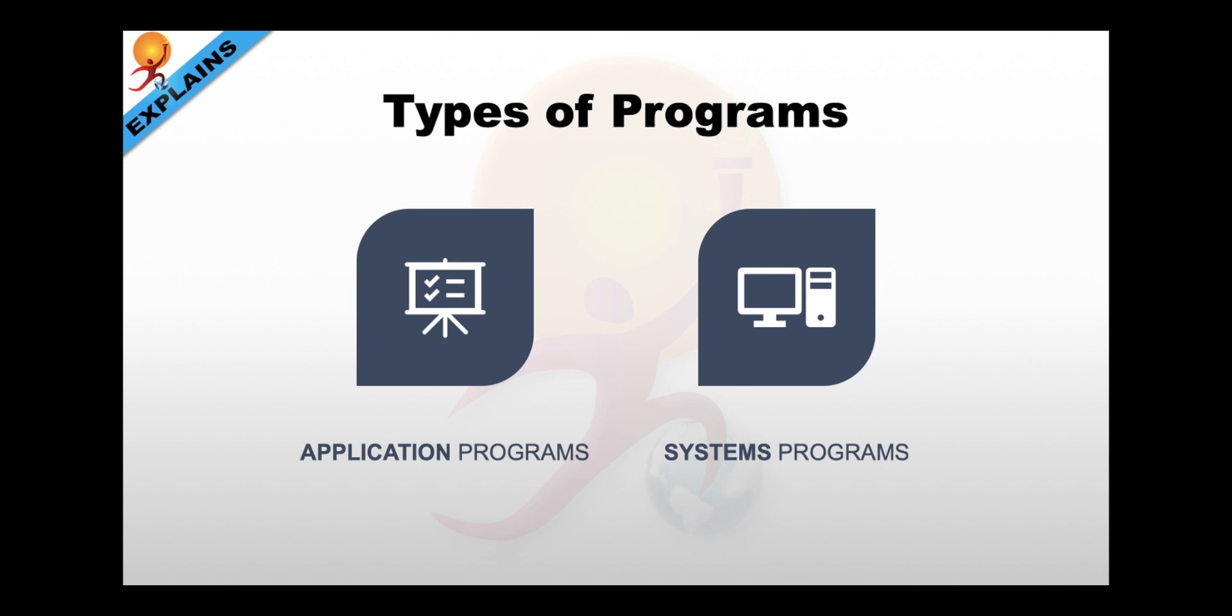Then there are system programs which help keep the hardware and software component of the computer running together smoothly. Operating systems like Windows, iOS, Android are best examples of system programs. But system programs is not only limited to operating systems. In fact, networking systems, programming language software, website server, data backups etc. are also a type of system programs.